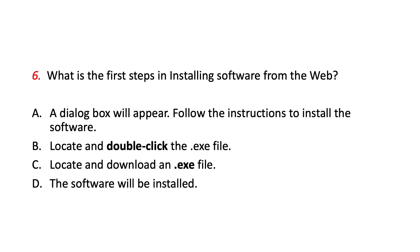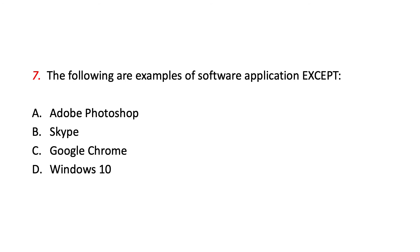5. What is the first step in installing software from the web? A. A dialog box will appear; follow the instructions to install the software. B. Locate and download a .exe file. C. Locate and download a .exe file. D. The software will install a .exe file.